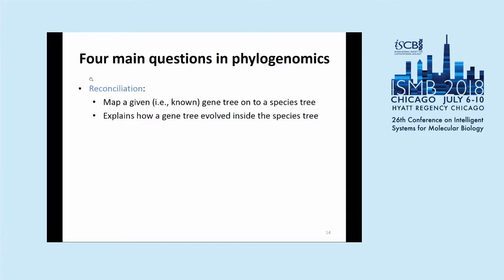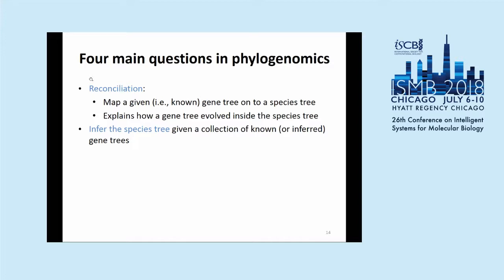The very first is just mapping a gene tree to the species tree. If you infer a gene tree from sequence data and you have a species tree that you know, you can try to map them to each other — this is called reconciliation. Reconciliation tells you how the gene tree evolved inside the species tree. A second kind of problem is: if you have a collection of inferred gene trees, what's the species tree? That's a computational problem you can attack.